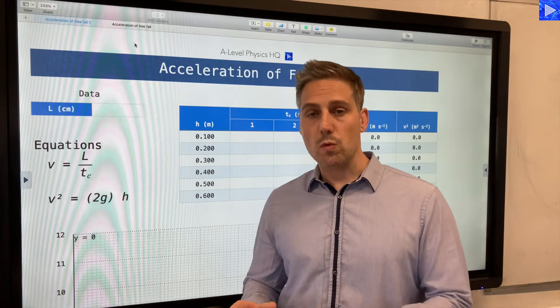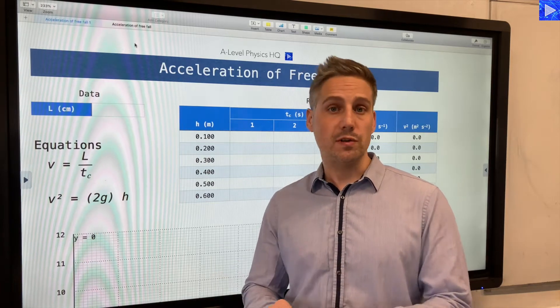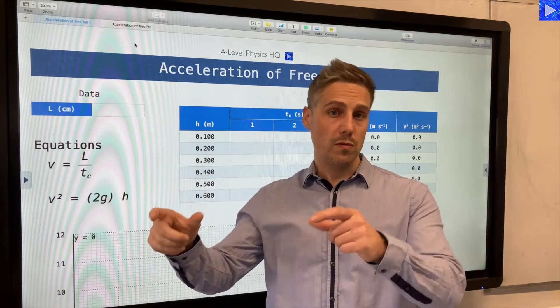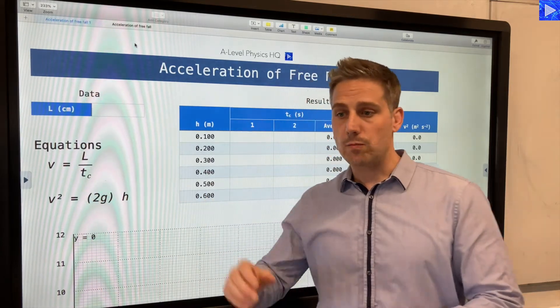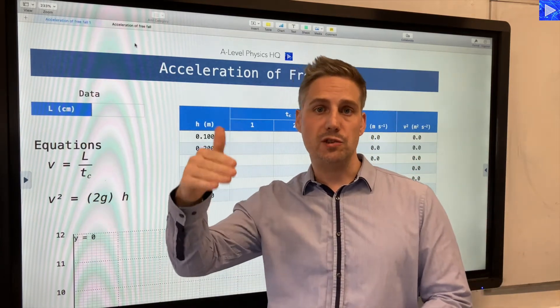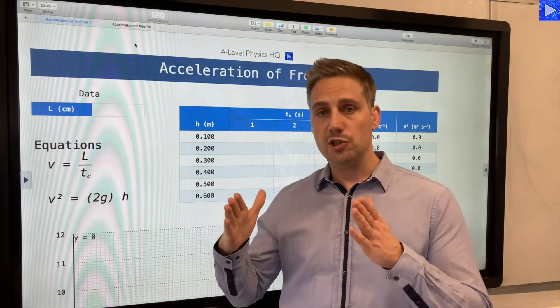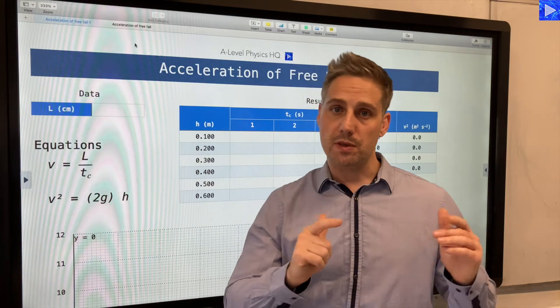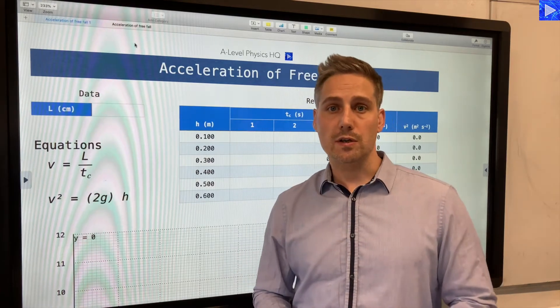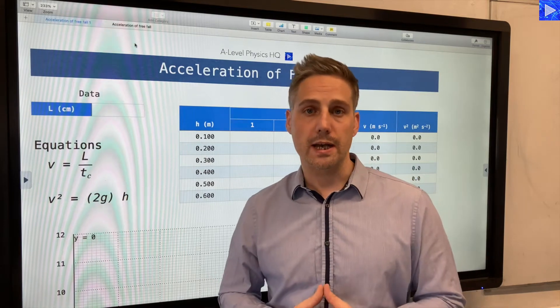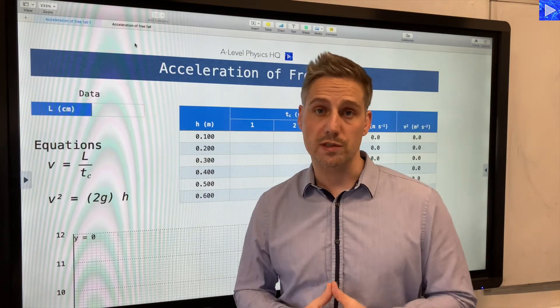If you remember in the experiment, we had a square piece of card which was weighted at the bottom so it would fall vertically through some light gates that we had mounted. We dropped that card from a range of different heights above the light gate, and we're going to use the light gate to determine the final velocity of the card and then analyze it with an equation of uniform acceleration.